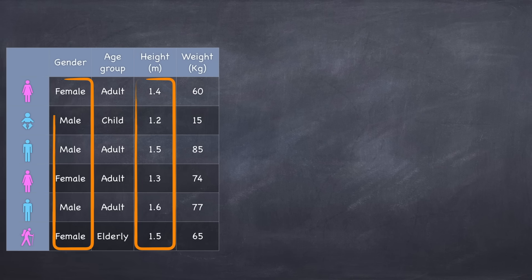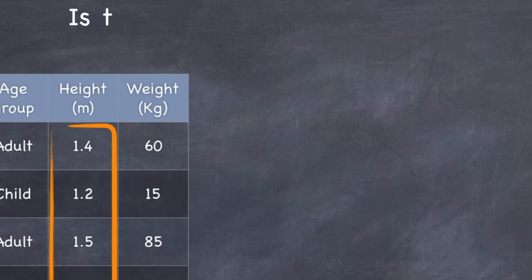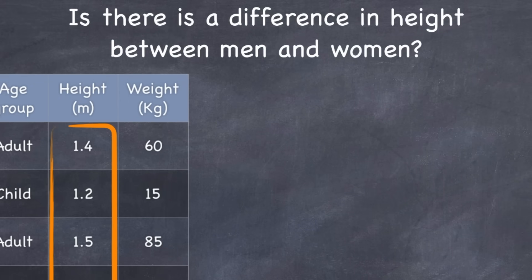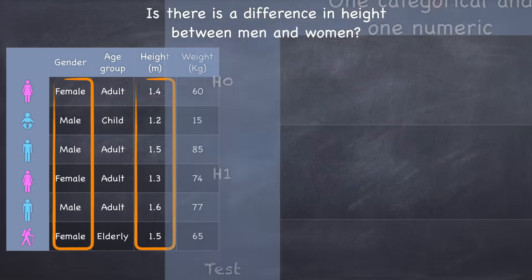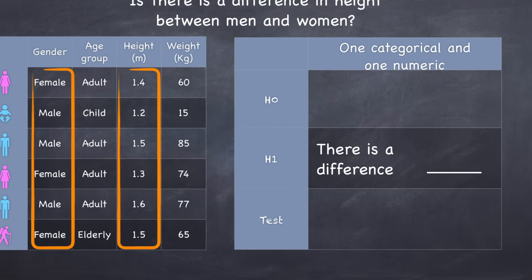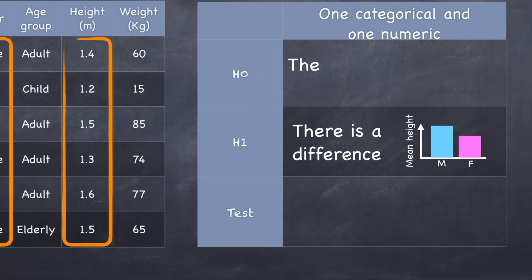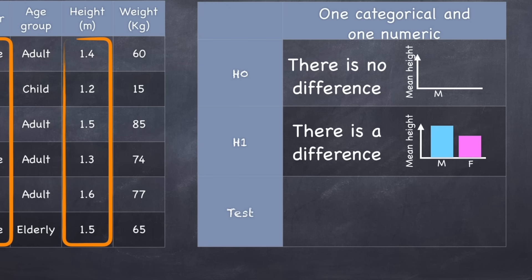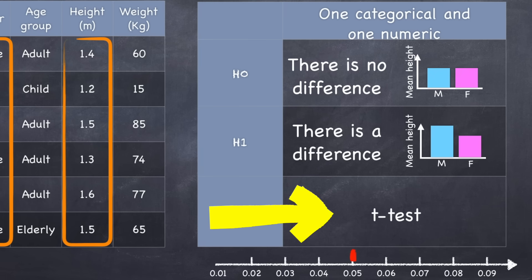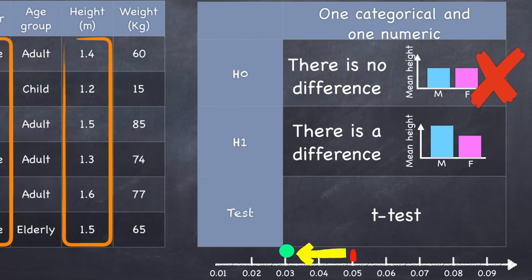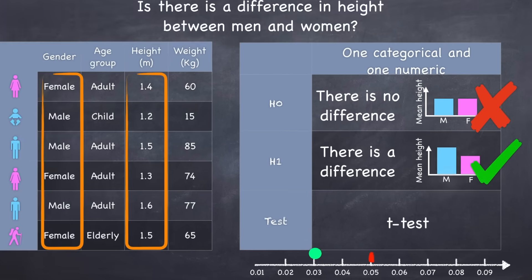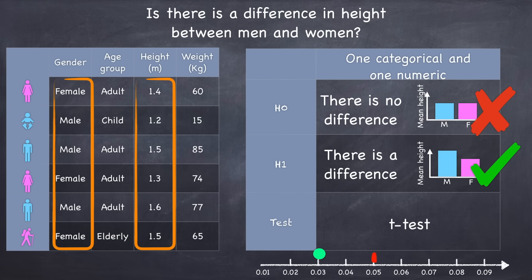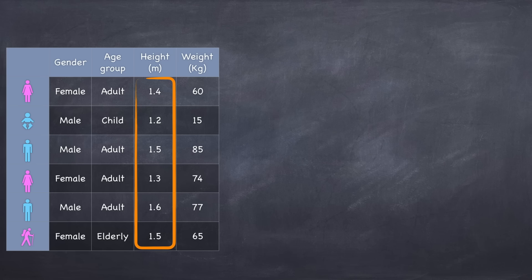Now let's consider a categorical and a numeric variable. We might ask: is there a difference between the average height of men and women? Our hypothesis is that there is a difference, and in our sample we do observe one. Assuming the null hypothesis of no difference, we conduct a t-test, which gives us a p-value. If p is less than alpha, we reject the null and state the observation is statistically significant. If we had a categorical variable with more than two categories — like age group with three categories — then instead of a t-test we would do an analysis of variance, or ANOVA.